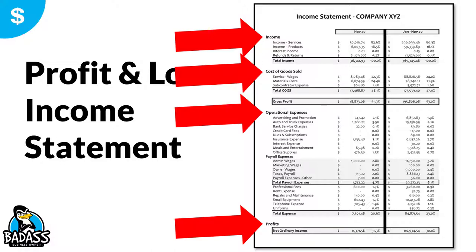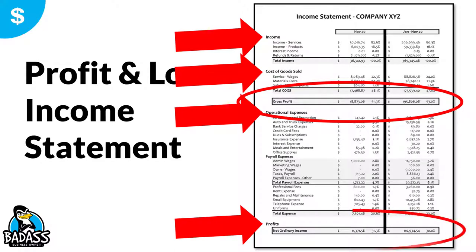It's just the flow of cash through your business. And this is important to understand because we're gonna go over here where it says gross profit. And this bottom one is your net profit — here it says net ordinary income. Your profit and loss could say it either way, but it's either net income or just net profits.